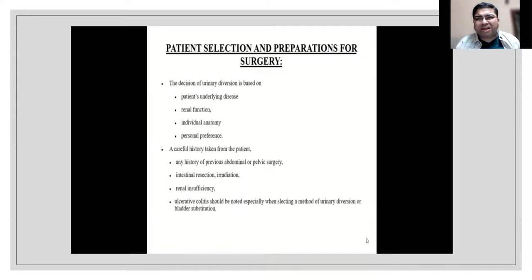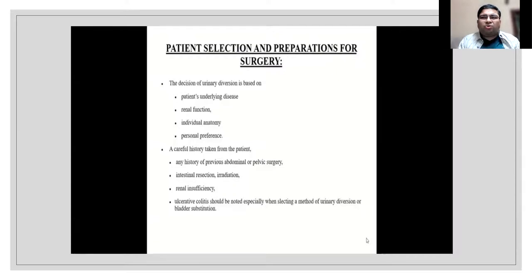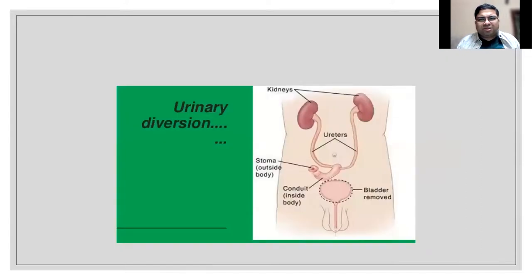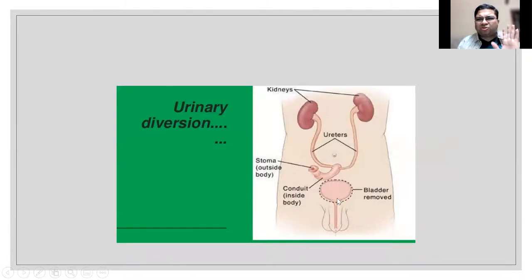Irradiated patients can receive a small ileal loop conduit but are not good candidates for continent pouches or neobladders. The basic concept of urinary diversion is implanting the ureters into a conduit or intestine that exits as a stoma outside, with the bladder removed. Temporary diversion includes suprapubic cystostomy, which many of us have performed during emergency duties.